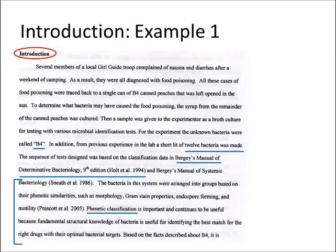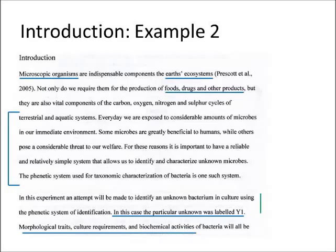Now, if making up a story isn't quite your speed, here's an example of another introduction where rather than going into a specific backstory, it starts with an overview of what microbiology is, down to its effects on humans, down to why we want to do what we were going to do in this experiment. So again, general down to specific, and then hitting those key points of mentioning the phonetic system and explaining it, talking about the name of your bacteria, and then going into what exactly you'll be looking for: morphological traits, culture requirements, biochemical activities, and so on.